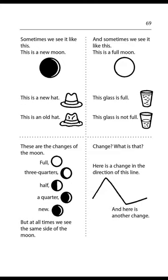Page 69. Sometimes we see it like this — this is a new moon. And sometimes we see it like this — this is a full moon. These are the changes of the moon: full, three quarters, half, a quarter, new. But at all times, we see the same side of the moon.